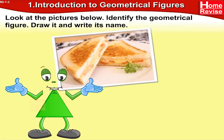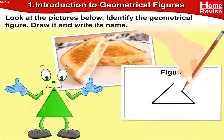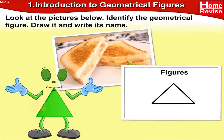This is a picture of a yummy sandwich. Can you identify the shape of the sandwich? Yes, it's a triangle! So you draw a triangle over here and the name of the figure is triangle.